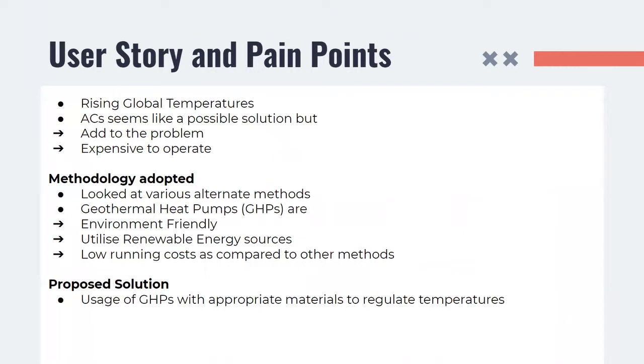Rising global temperatures are making living without an AC more and more difficult by the day. However, a majority of people are concerned since ACs also contribute to the problem and are very expensive to operate. They are looking for new ways to regulate heat in their homes and workplaces. We looked at various alternate methods for ambient cooling that can be installed.